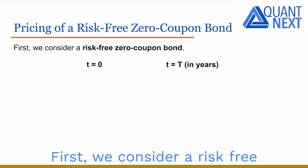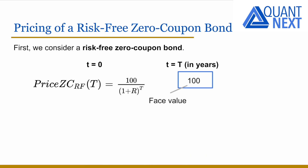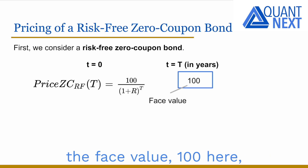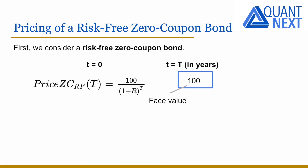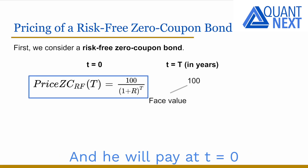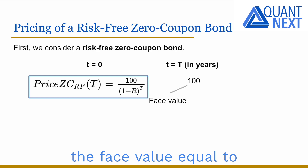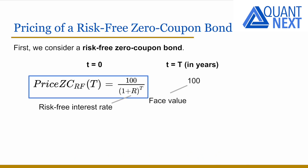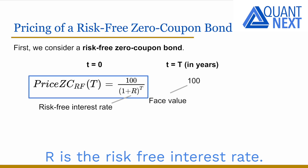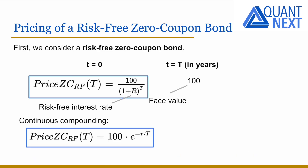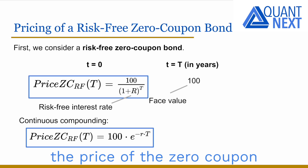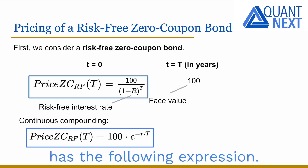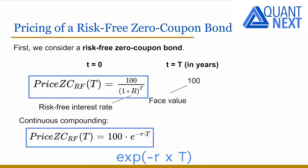First we consider a risk-free zero coupon bond. The buyer of the bond will receive the face value — 100 here — at the maturity of the bond, and will pay at t equals zero a price below the face value, equal to the face value times the discount factor 1 divided by (1 plus R) to the power t, by no-arbitrage assumption. Capital R is the risk-free interest rate; there is no coupon payment. With continuous compounding, the discount factor is equal to the exponential of minus r times t.